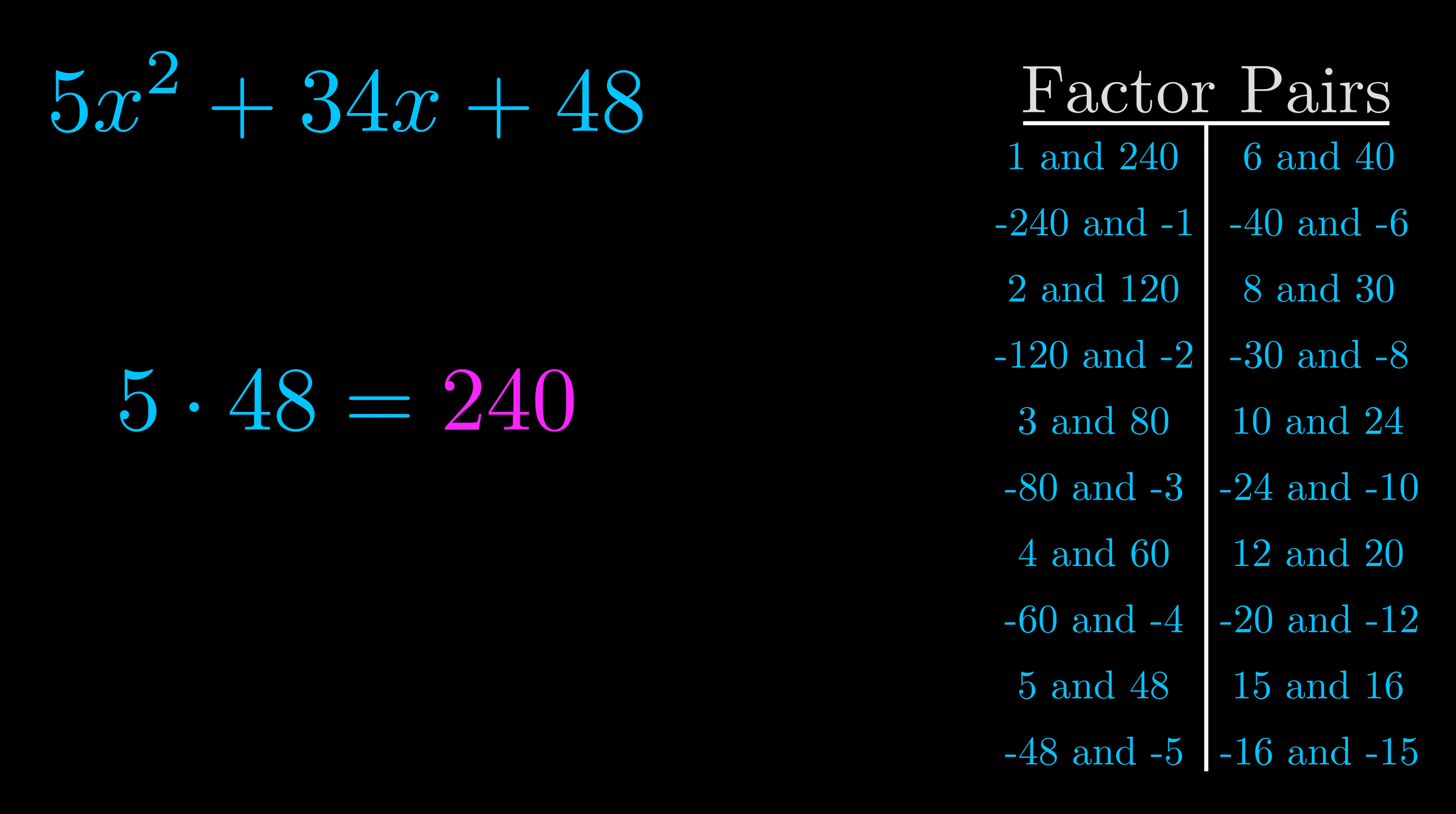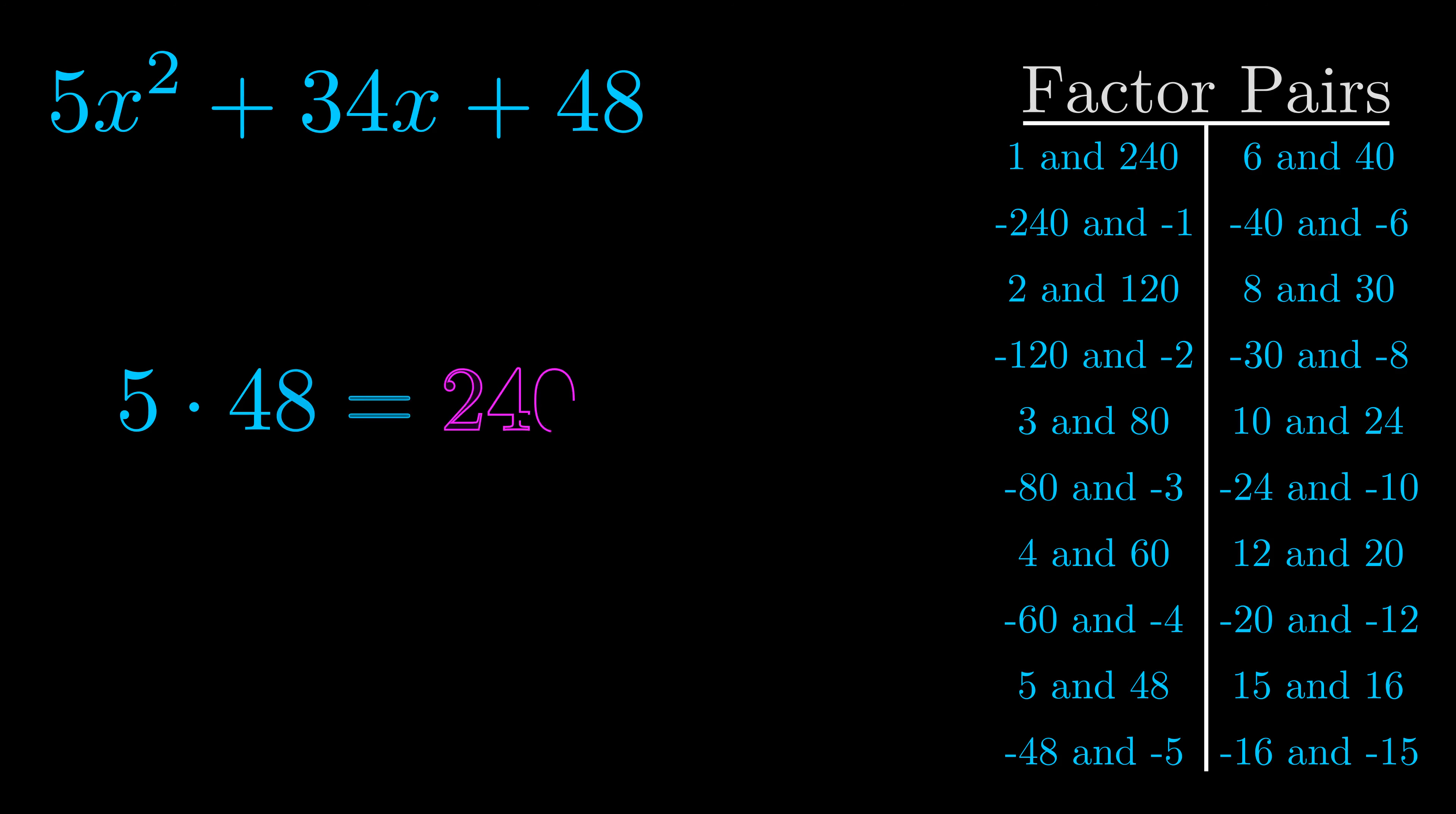Now once you have these factor pairs, the goal is to find which of these pairs adds to the b value. The b value is the coefficient on the x term, that's the middle term, the one that we haven't done anything with yet. And really this is the only factor pair that we need.